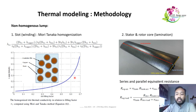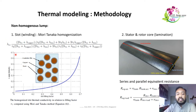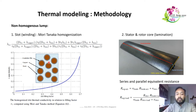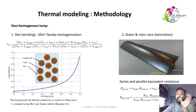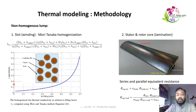For the slot winding, we use the homogenization method using the Mori-Tanaka equation, which takes into account the filling factor — how much copper, air, and insulation film is present. As a function of the filling factor, the equivalent thermal conductivity of the slot can be determined. In our case, a filling factor between 0.3 and 0.4 leads to a thermal conductivity of around 0.1 W/m·K.